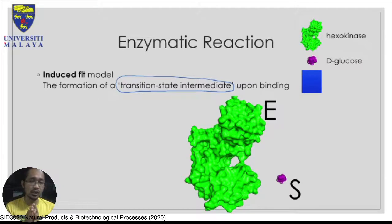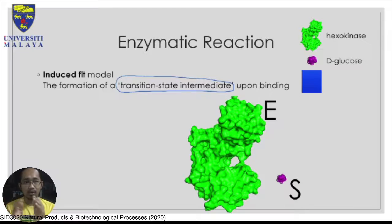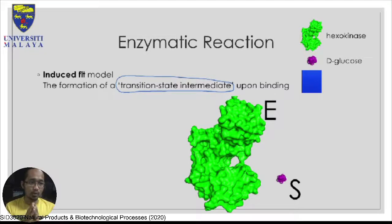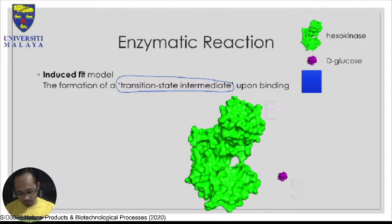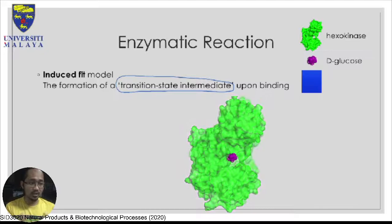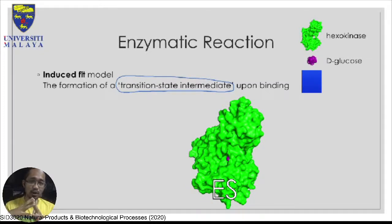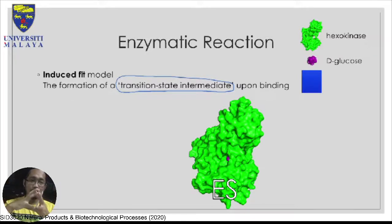In the Induced Fit model, you can see the enzyme and substrate are actually moving. The substrate moves into the active site and the enzyme moves to complement the space occupied by the substrate — in this case the example is glucose. The image shown is actually a real crystal structure of hexokinase enzyme with D-glucose, obtained via X-ray crystallography, showing the open stage of the enzyme and then the enzyme-substrate complex stage.